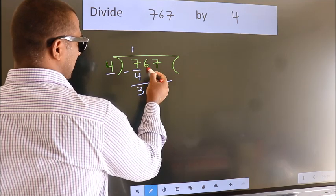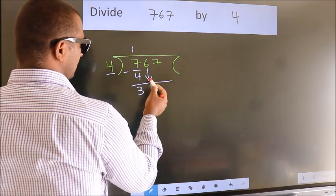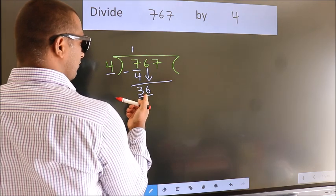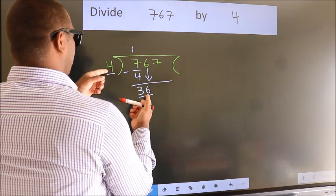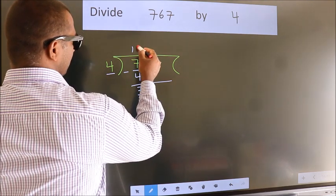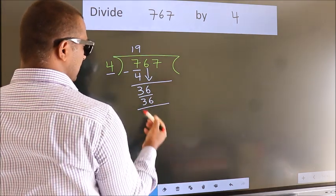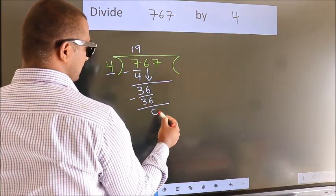After this, bring down the beside number. So 6 down, giving us 36. When do we get 36 in the 4 table? 4 nines, 36. Now we subtract. We get 0.